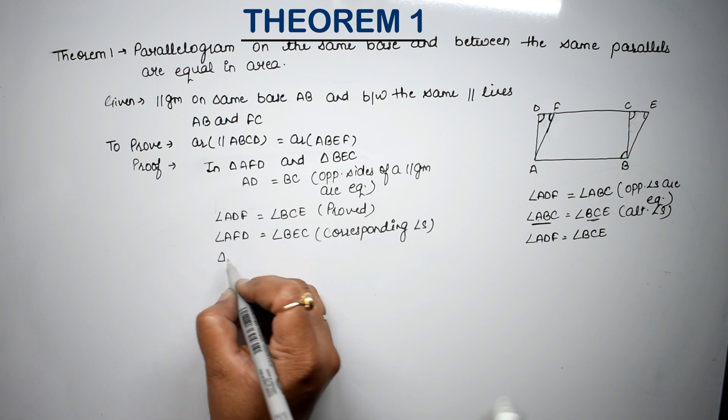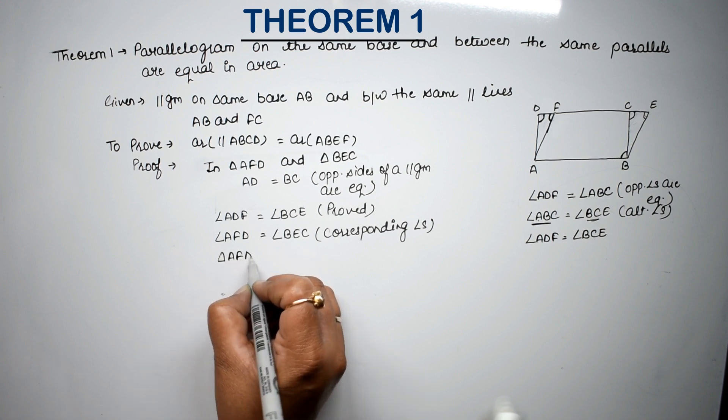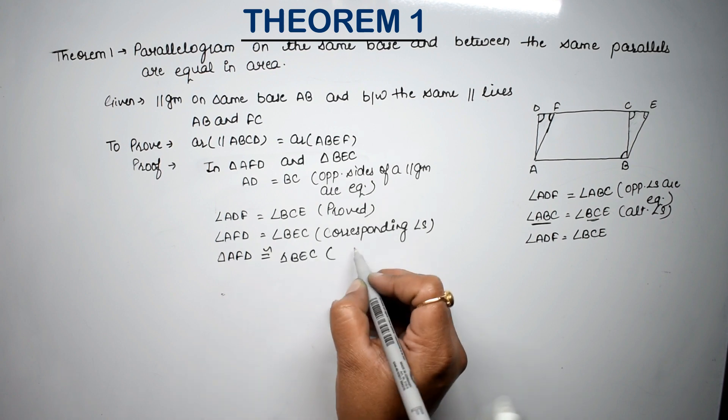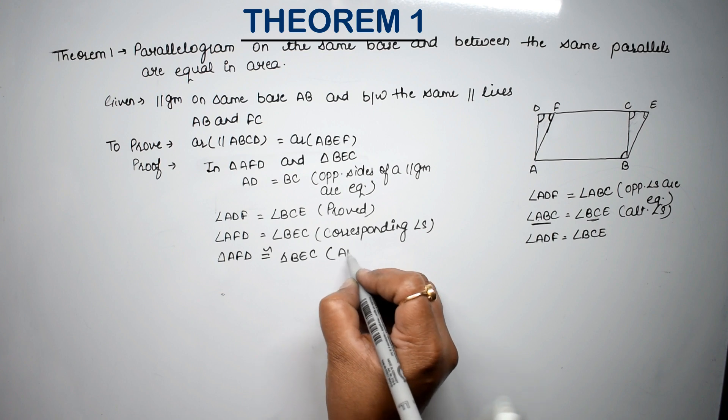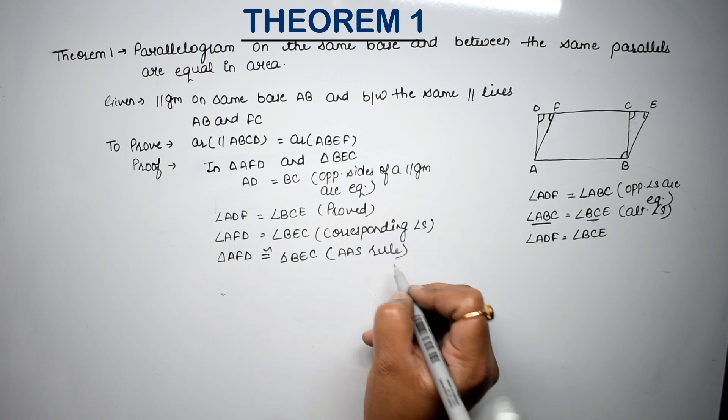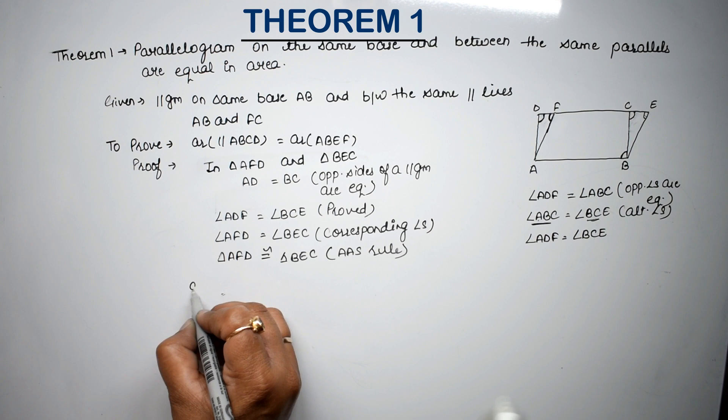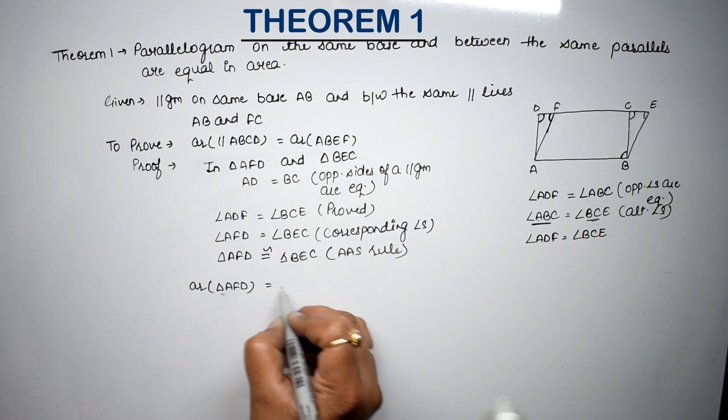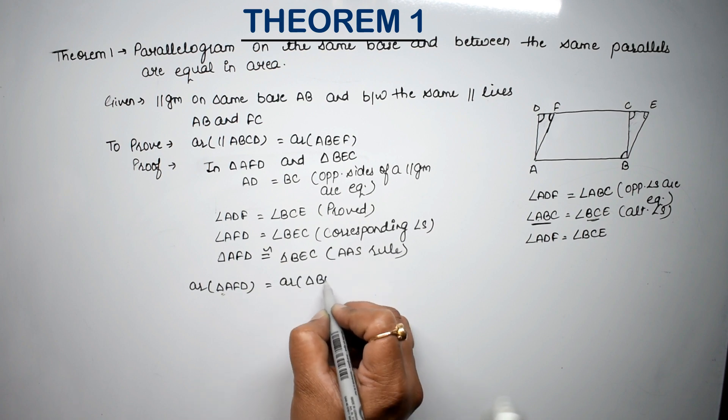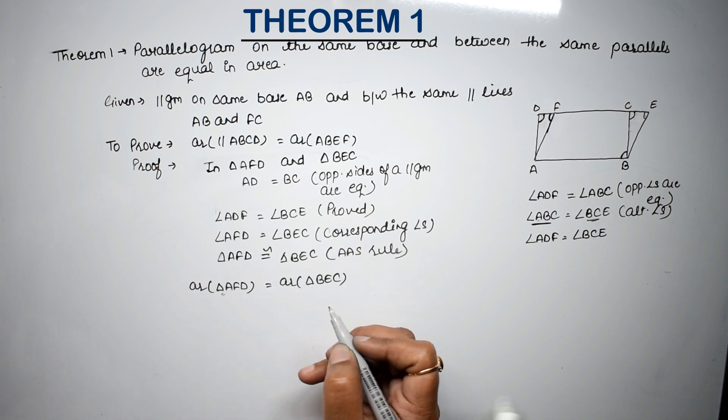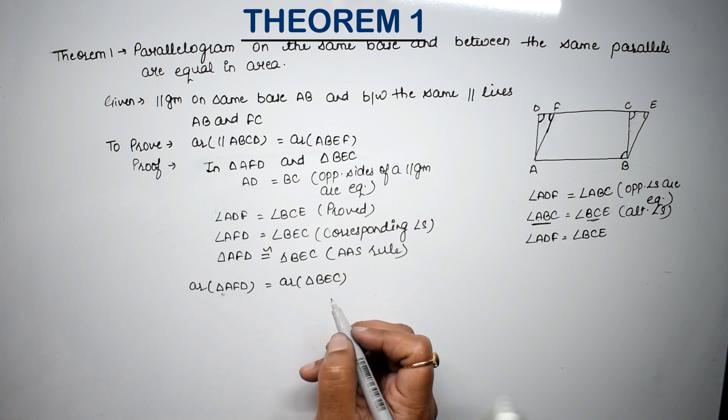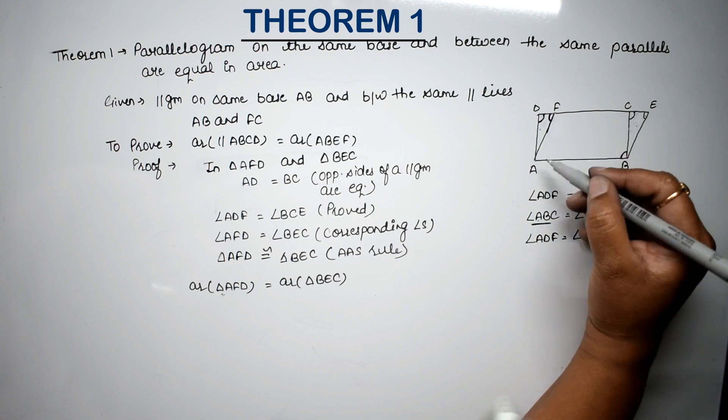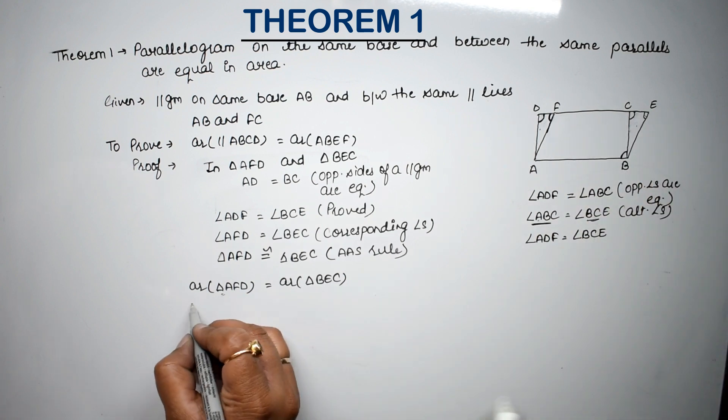So these two triangles, triangle AFD is congruent to triangle BEC. By which rule? AAS rule. Both are congruent. If congruent, then we can say that area of triangle AFD is equal to the area of triangle BEC. Right? Now when the areas are equal, these two areas are equal. Now I can add the common part to both areas.